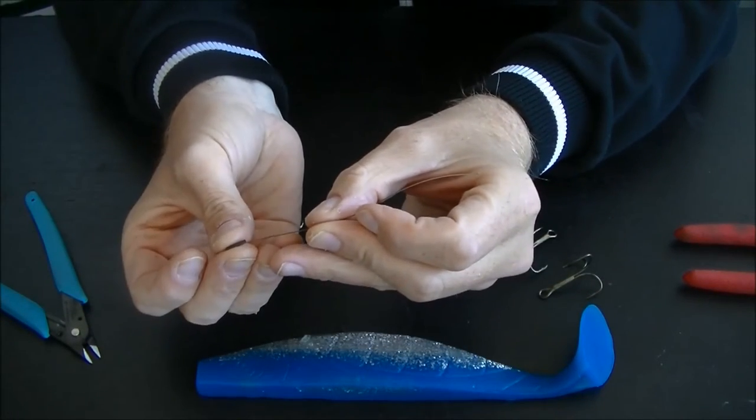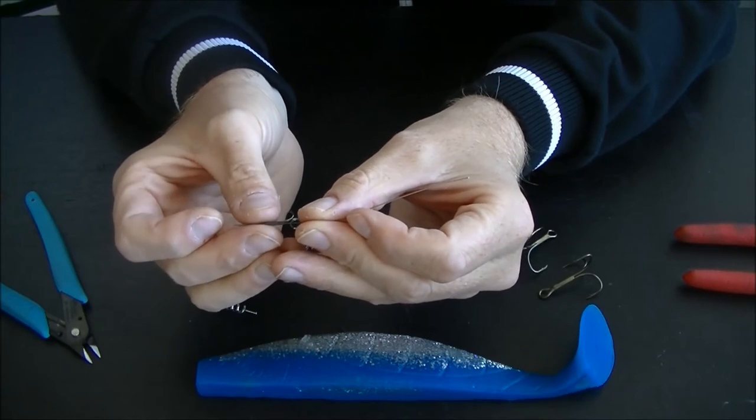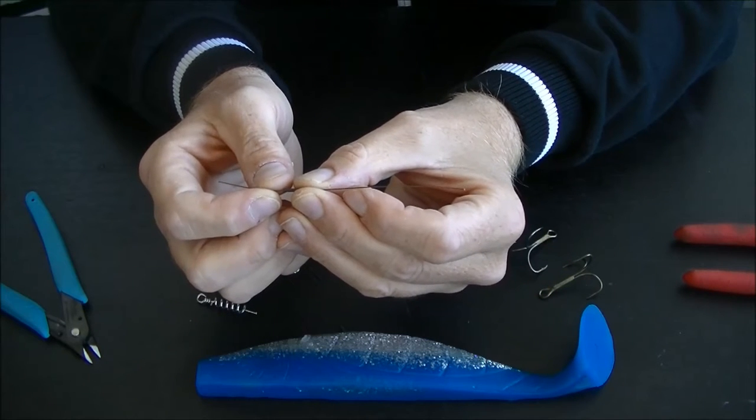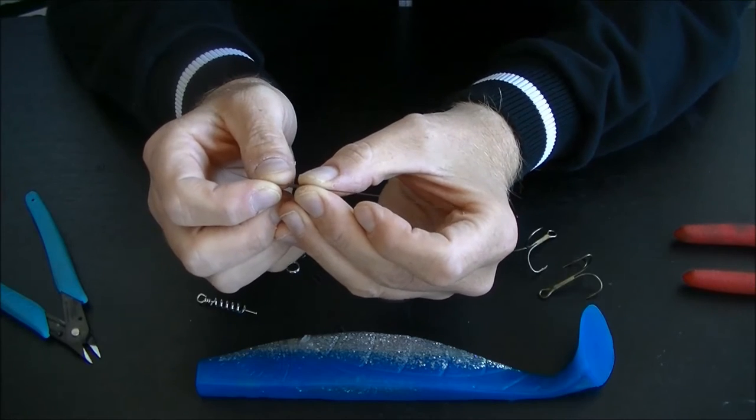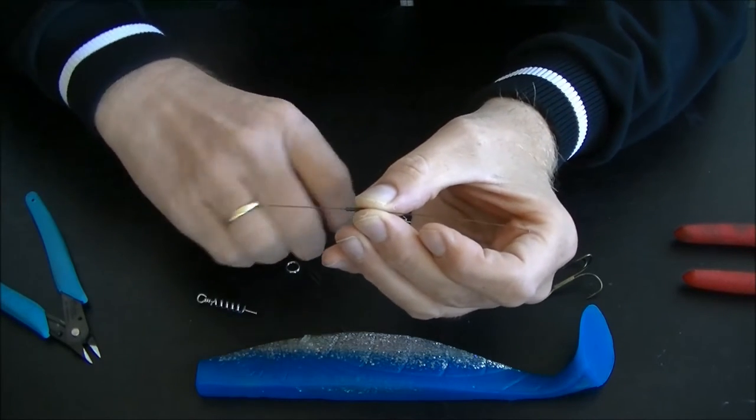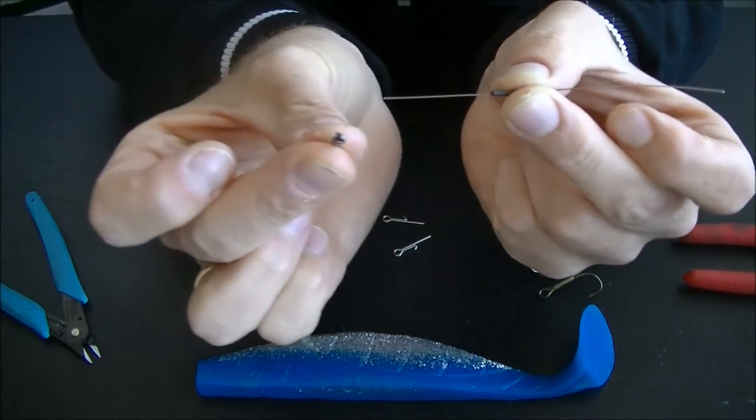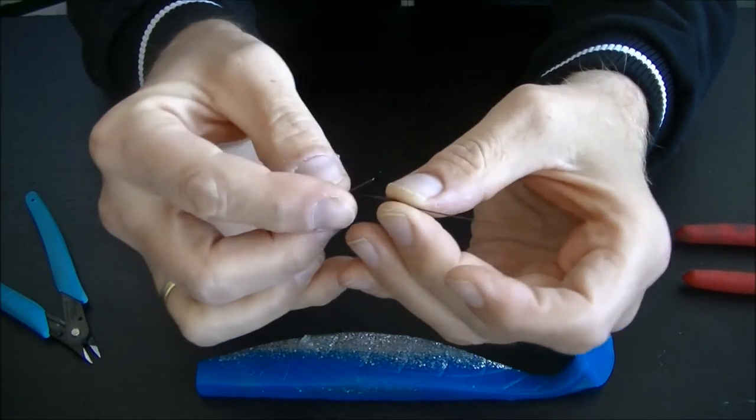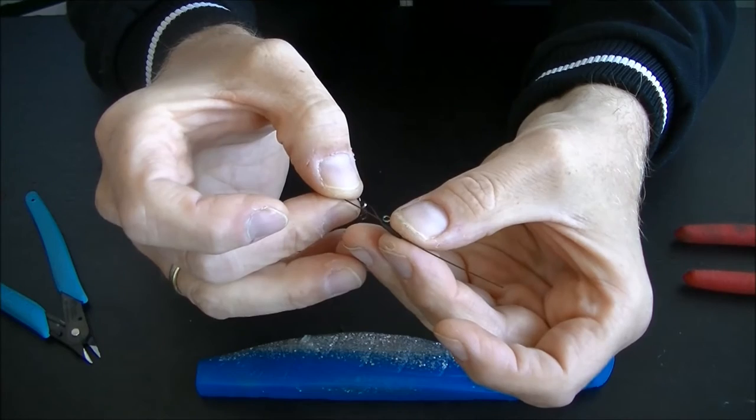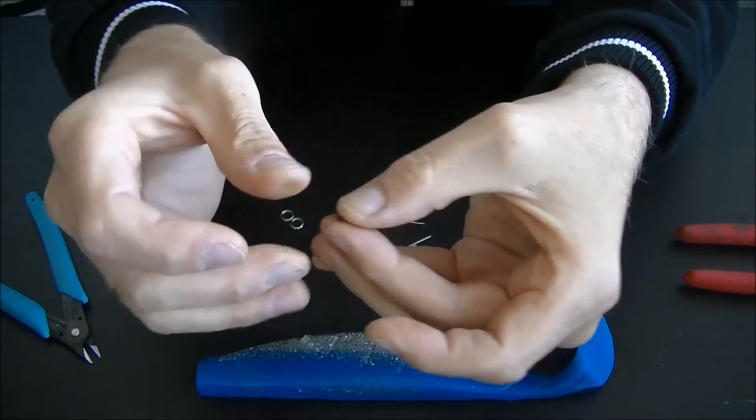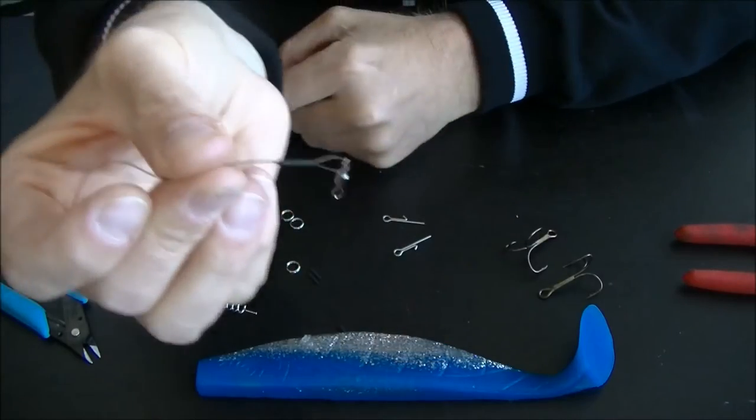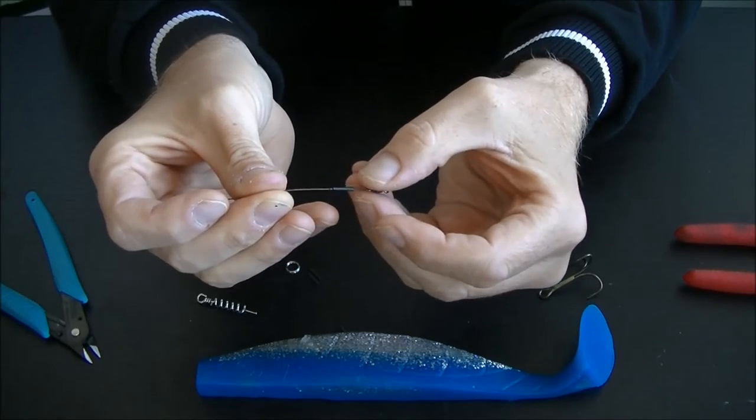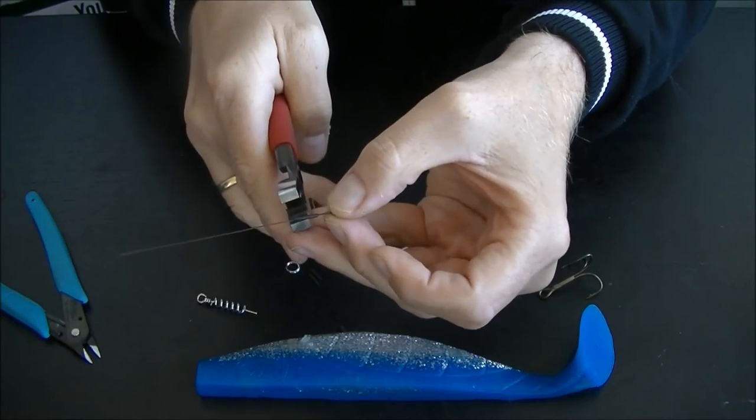What do I do? I simply slide over the sleeve, and then I'm going to grab the swivel, and then we crimp it.